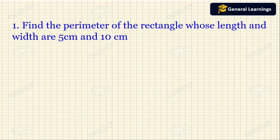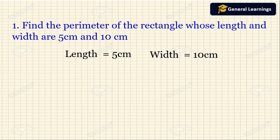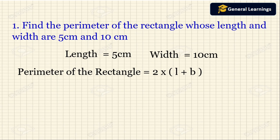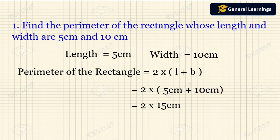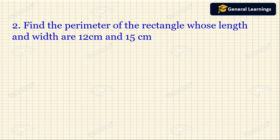Find the perimeter of the rectangle whose length and width are 5 centimeter and 10 centimeter. So length L equals 5 centimeter and width B equals 10 centimeter. The perimeter is 2 into L plus B, so 2 into 5 plus 10. Adding 5 plus 10 gives 15, and 2 into 15 gives 13 centimeter. So the perimeter of the rectangle is 13 centimeter.